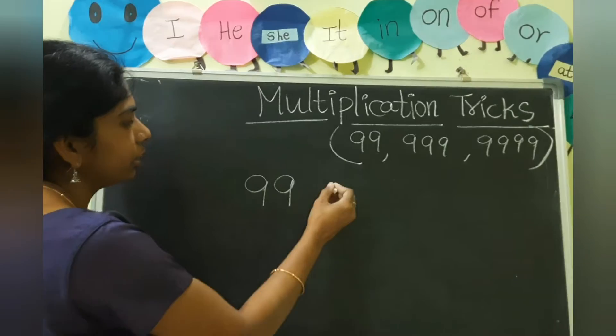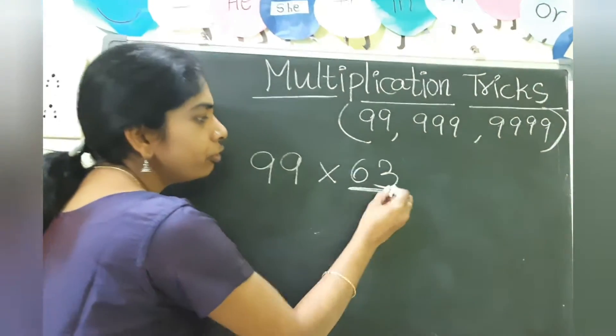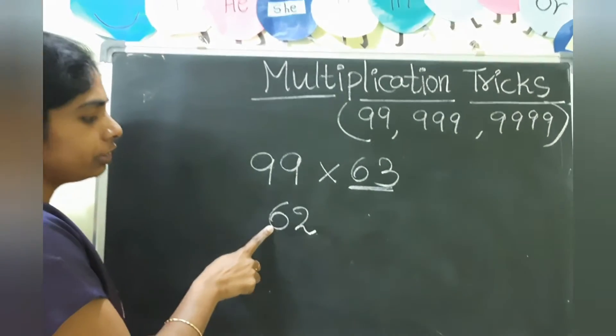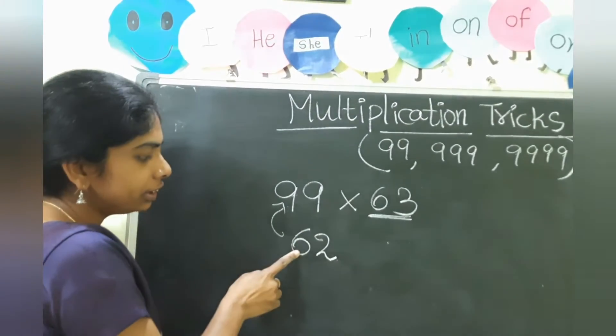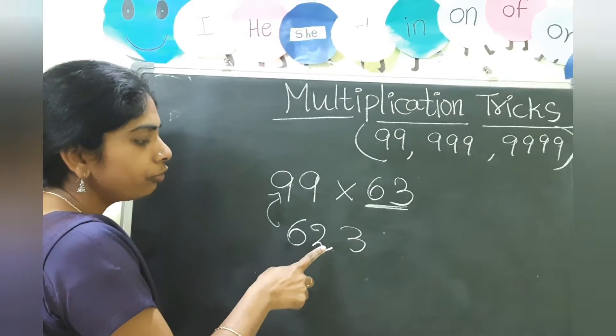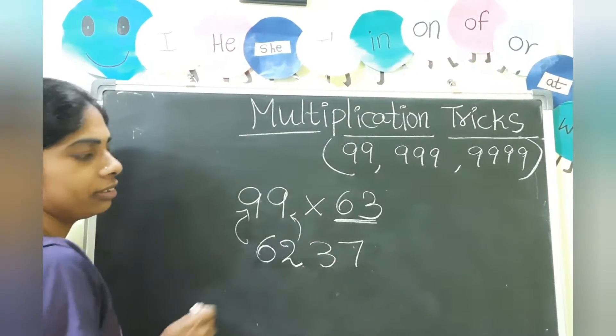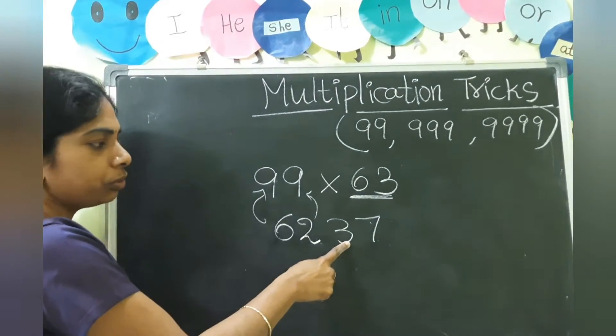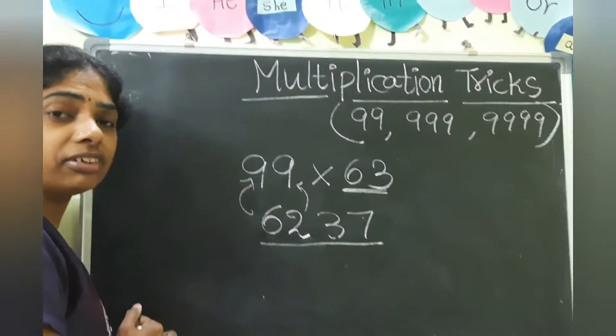Suppose I take 99 into 63. So what is the before number of 63? 62. Now see the first digit. How much we have to add to get number 9? 6 plus 3 is 9, so 3 we have to write. Now for number 2, how much we have to add to get 9? 7. 9 minus 2 is 7. 9 minus 6 is 3. So the answer is 6237.